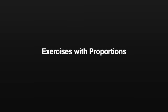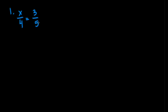Let's do some exercises involving proportions — we are told to solve for x. We're going to use the means-extremes property. So x times 5 equals 5x, and 3 times 4 equals 12. So we have 5x equals 12. We want to get x by itself, so we divide both sides by 5. Our final answer is x equals 12 over 5, which is already in simplest form.